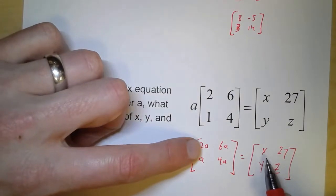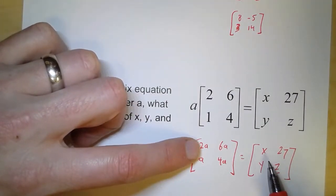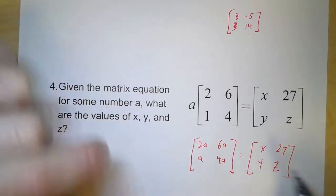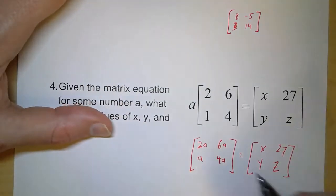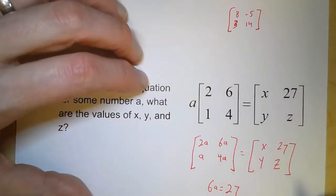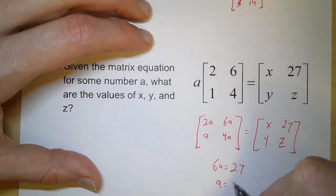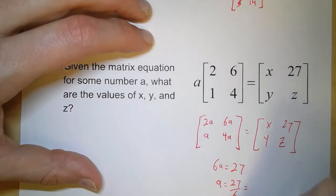Now, if we set 2A equal to x, that doesn't tell us anything really about either x or A, just the fact that x is twice as big as A. But if we set 6A equal to 27, we can solve for that. If we divide, that's 27 over 6. Or if we cancel a 3, that's 9 halves, or 4.5.